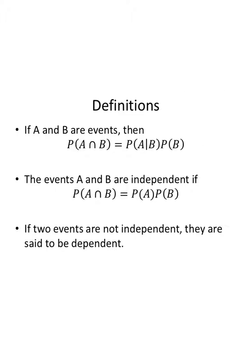A couple more definitions. If A and B are events, reworking the formula, we find that the probability of A intersect B equals the probability of A given B times the probability of B. Also, events A and B are independent if the probability of A intersect B equals the probability of A times the probability of B. If two events are not independent, they are dependent. These two formulas are the same except probability of A versus probability of A given B — meaning B has no effect on whether A occurred.